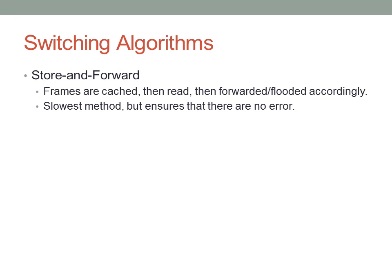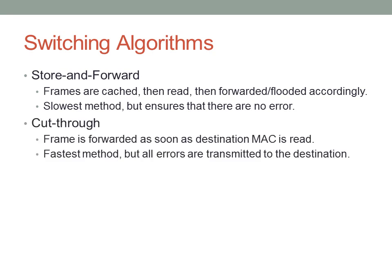Store-and-forward takes a little more time, but because we go through the entire frame and compare the checksum, no frames with errors will be forwarded to other interfaces. Another method is cut-through switching, where a frame is forwarded to the correct interface as soon as the destination MAC address is read. Since the destination MAC address is the first thing in a frame, this happens almost instantaneously. However, if there is an error in the frame, those errors will be automatically forwarded immediately.